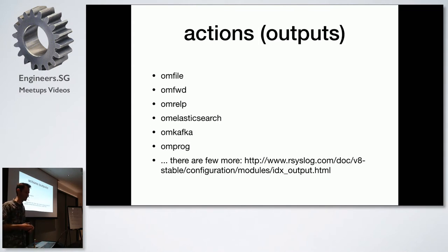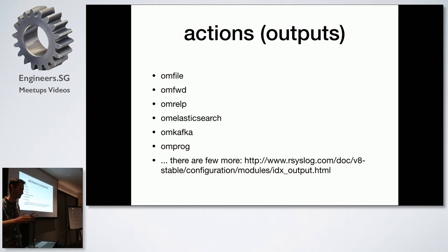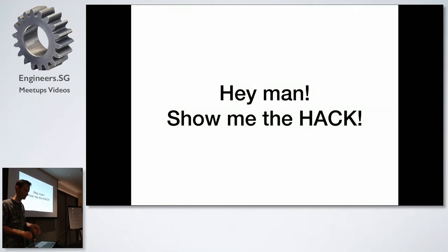We also have a few output actions — places where you can send processed messages — like file, another machine, Elasticsearch, Kafka, an external program, or other things like that.